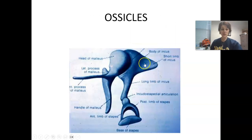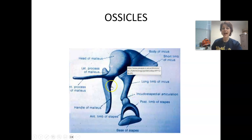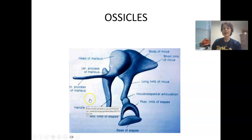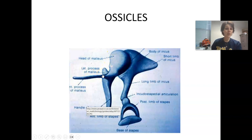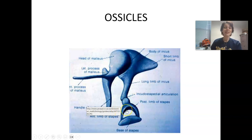Here is another look at how the ossicles are matched up. Notice that the surface of both the malleus and the stapes are going to be flat. The malleus is pretty flat because it attaches to the eardrum. Likewise, the flat portion of the stapes attaches to the oval window.